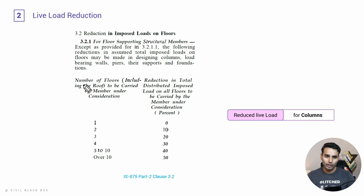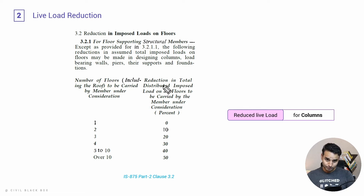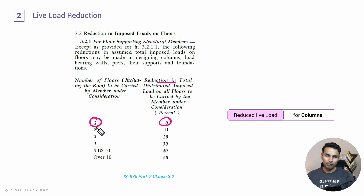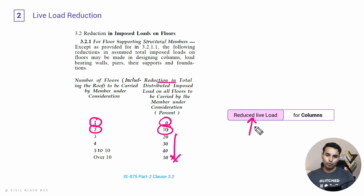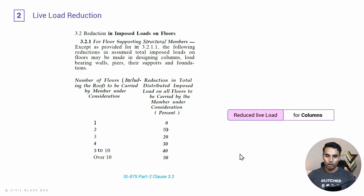The reduction will depend upon the number of floors, including the roof, which is being carried by the member under consideration. If a column is carrying just one floor above it, there is no reduction. However, if it is carrying two floors above it, there is going to be a reduction of 10%, and so on and so forth. If you want a more detailed video on live load reduction for columns, hit me up in the comments.